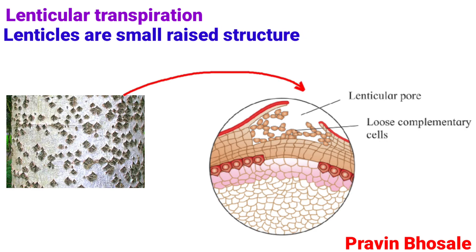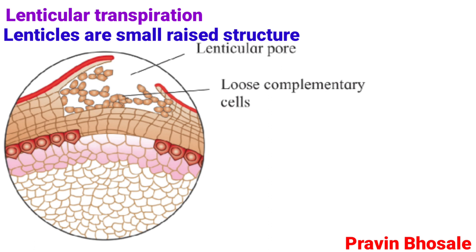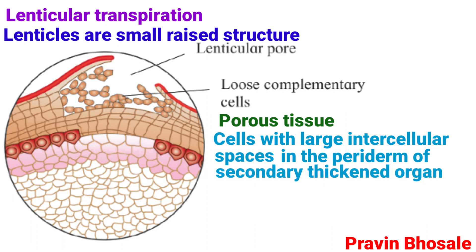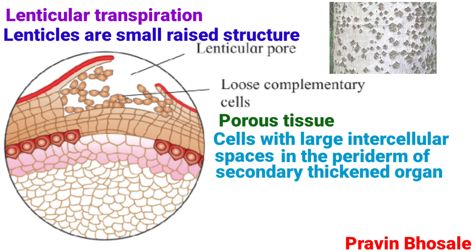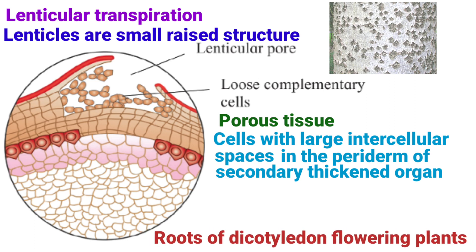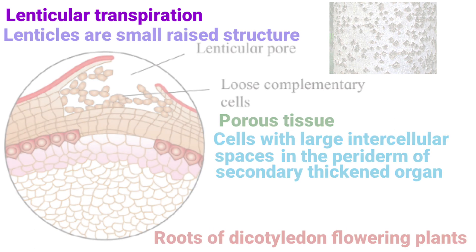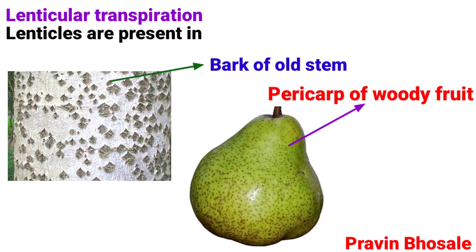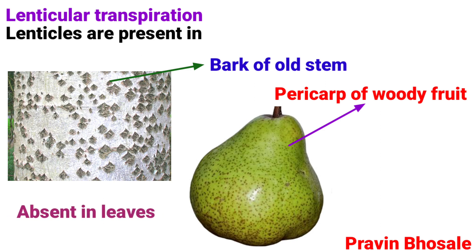Lenticular transpiration: lenticles are small raised structures composed of loosely arranged complementary cells. Each lenticle is a porous tissue consisting of cells with large intercellular spaces in the periderm of secondarily thickened organs and the bark of woody stems and roots of dicotyledon flowering plants. Lenticles are present in the bark of old stems and pericarp of woody fruit, but are absent in leaves.